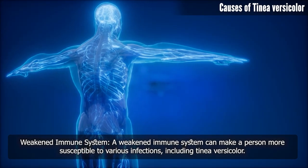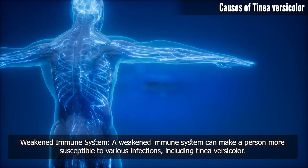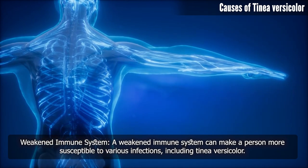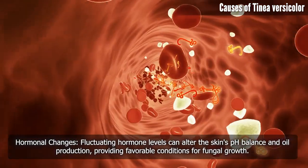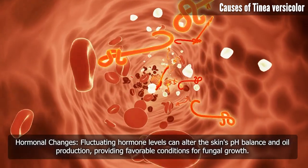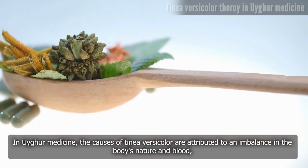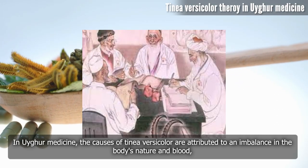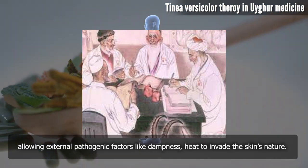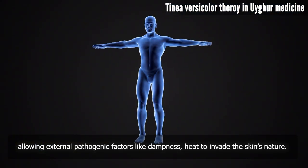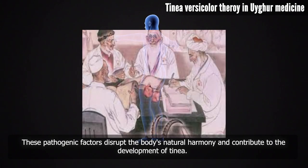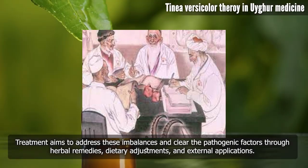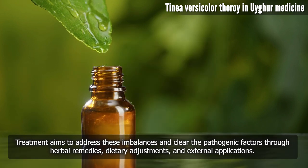A weakened immune system can make a person more susceptible to various infections, including tinea versicolor. Hormonal changes and fluctuating hormone levels can also alter the skin's pH balance and oil production, providing favorable conditions for fungal growth. In Uyghur medicine, the causes of tinea versicolor are attributed to an imbalance in the body's nature and blood, allowing external pathogenic factors like dampness and heat to invade the skin. Treatment aims to address these imbalances through herbal remedies, dietary adjustments, and external applications.